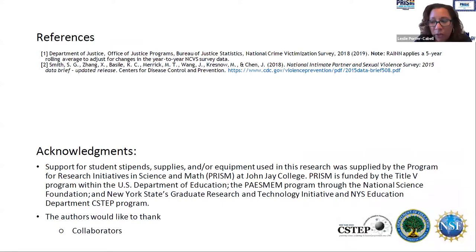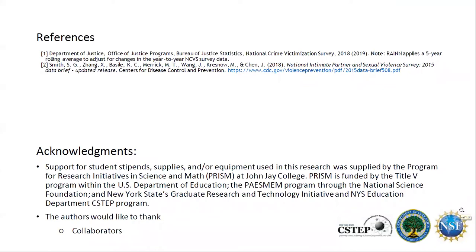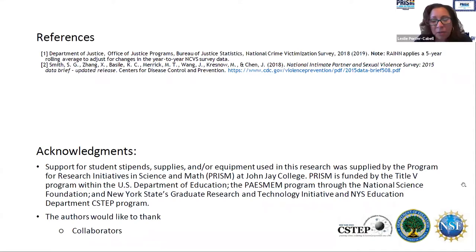Question: What advantage do urine samples have over other types of matrices tested in forensic cases? Urine samples are easy to obtain and they don't require a needle or anything to get them. There's also a longer detection time in urine for most drugs.